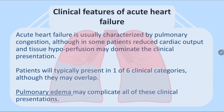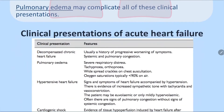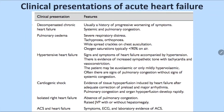Acute heart failure is usually characterized by pulmonary congestion, meaning there is a lot of fluid, though sometimes there is reduced cardiac output and tissue hypoperfusion. Patients typically present in one of six clinical categories, the most common being pulmonary edema.